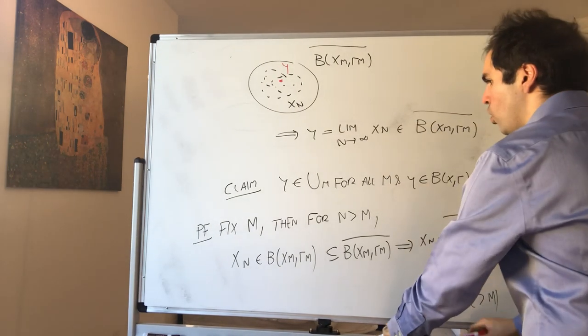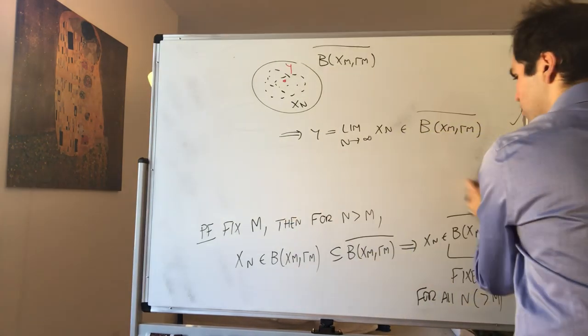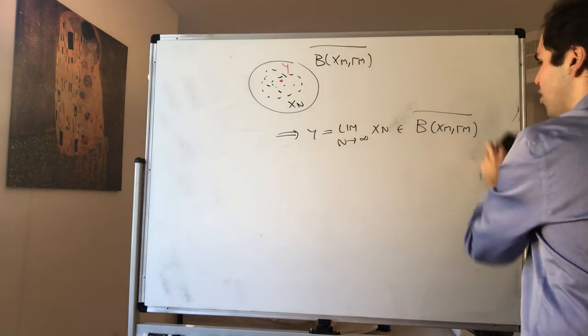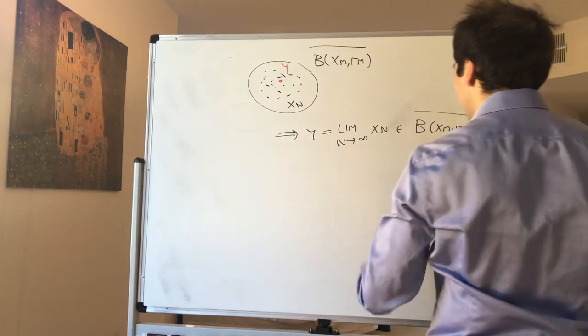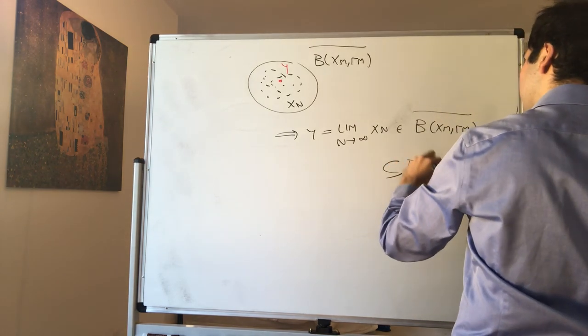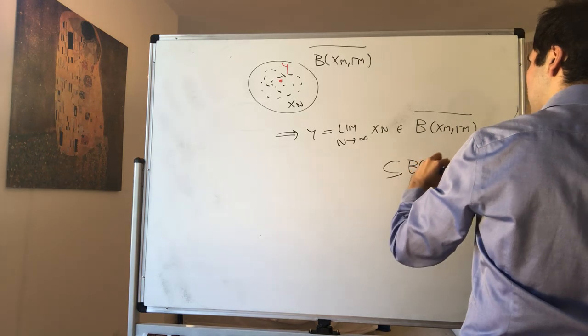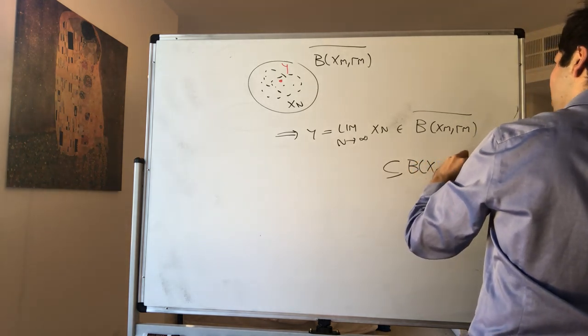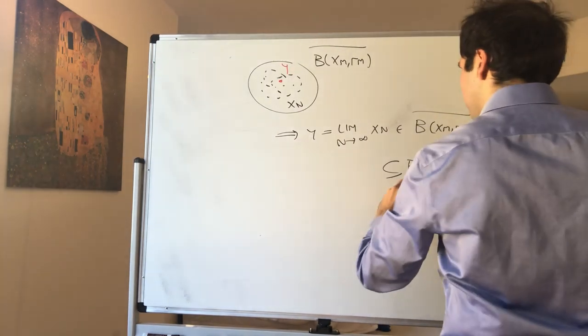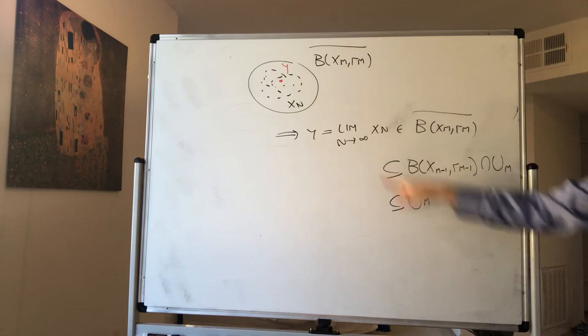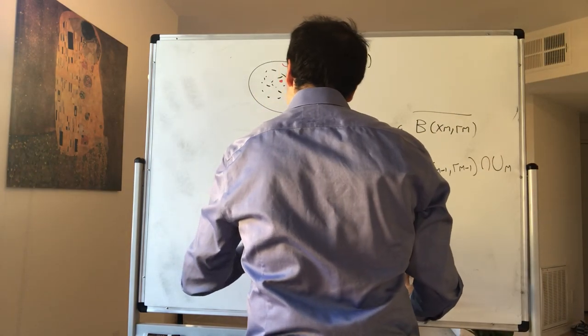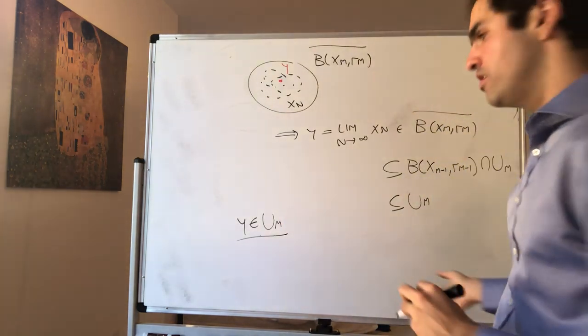However, what do we know about that ball? Now we know that, for obvious modifications for m equals 1, we know that this ball by construction is included in B(x_{m-1},r_{m-1}) intersect um. But then this is just a subset of um. So what have we shown? We've shown that y is in um. And since m was arbitrary, this is true for all m.